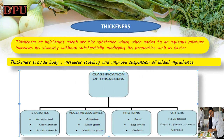Thickeners or thickening agents are substances which, when added to an aqueous mixture, increase its viscosity without substantially modifying its other properties such as taste. They provide body, increase stability and improve suspension of added ingredients. Thickeners are often used as food additives and also in cosmetics and personal hygiene products. Thickeners are classified as: 1. Starches like arrowroot, corn flour, potato starch etc. 2. Vegetable gums like alginic acid, guar gum, xanthan gum etc.